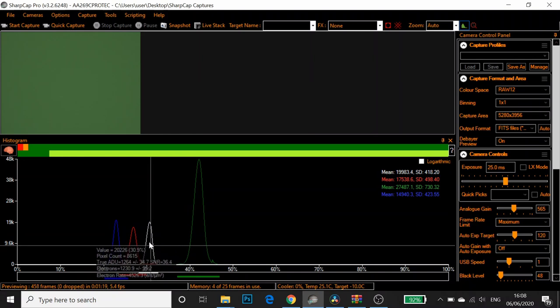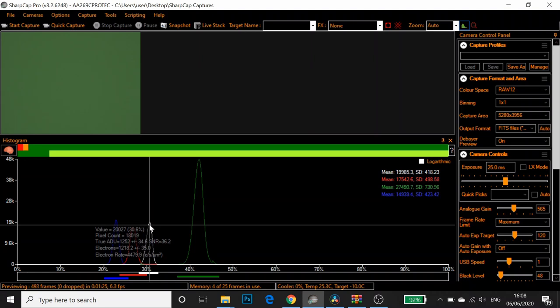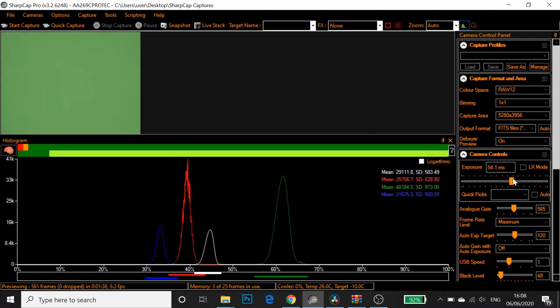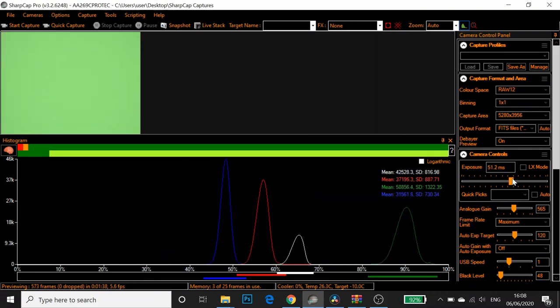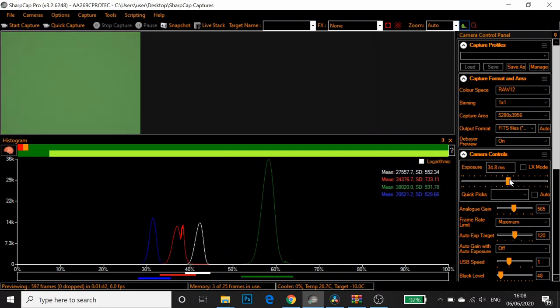And this is a 12-bit sensor. So I'm looking for a true ADU, can you see where it says true ADU of around 2000 with the white peak?